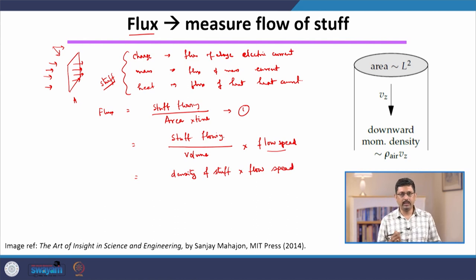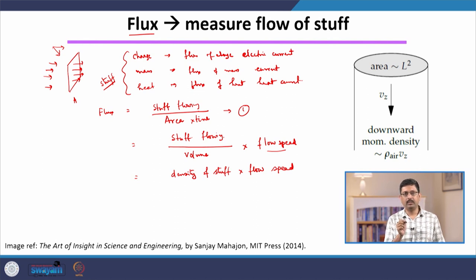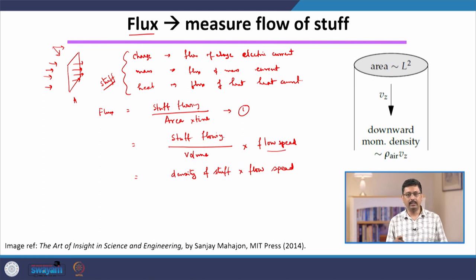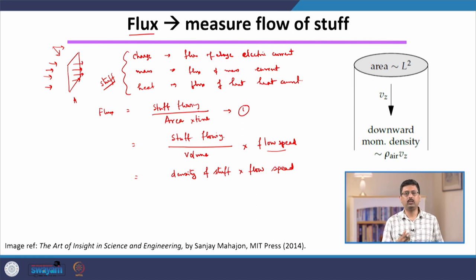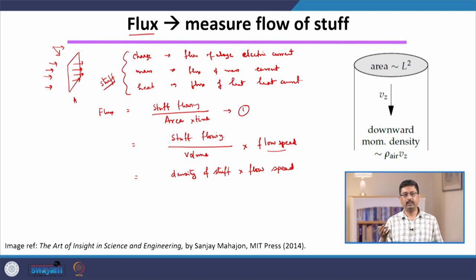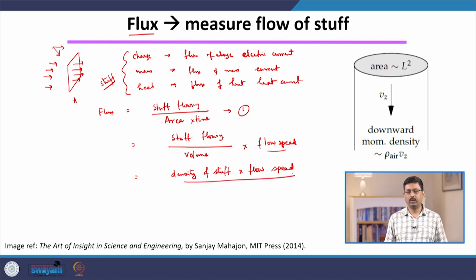For example, if the stuff is charge, then charge density times the speed of the charge constitutes the flux. If mass is flowing — say, mass of water coming out of a shower or flowing through a river — then this is mass density (our normal density) times the speed of flow. If it is energy or heat, then this is energy density or heat density times the speed of flow. That is all we need to know for our analysis.